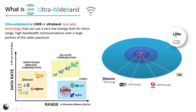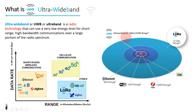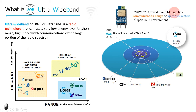Range means how far you can transmit the signal using these wireless technologies. In this image, you can see typical communication ranges for Bluetooth, Wi-Fi, ZigBee, LoRa, and other wireless technologies. Similarly, ultra-wideband can have a communication range up to 50 to 100 meters — that is up to 300 feet. UWB comes in the same category as Bluetooth and Wi-Fi, that is short-range wireless communication. The UWB transceiver module we are going to review has a communication range up to 100 meters in open field environment.